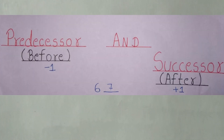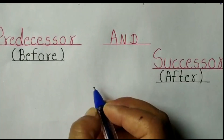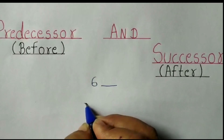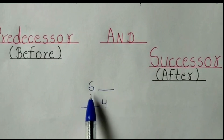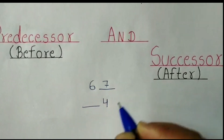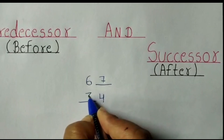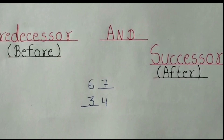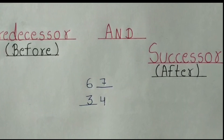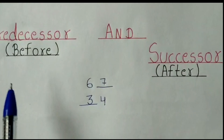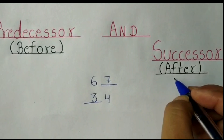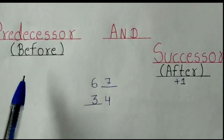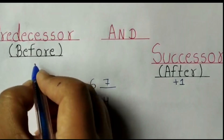In standard first or second we have done questions like: what comes after 6, and what comes before 4. What comes after 6 means plus 1, that is 7. What comes before 4 is minus 1, that is 3. Same concept applies to successor and predecessor. Successor means 'after,' and predecessor means 'before.' So whenever we find the successor, we add 1 to the given number, and whenever we find the predecessor, we subtract 1.